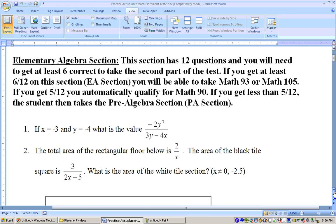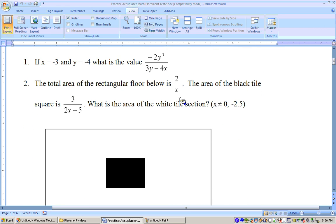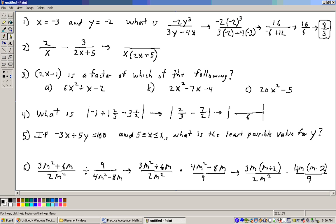The first question is, if x equals negative 3 and y equals negative 4, what is the value of this expression right here? So I got this written up on paper and pencil, and it says if x equals negative 3 and y equals negative 2, what is the value of negative 2y cubed over 3y minus 4x?